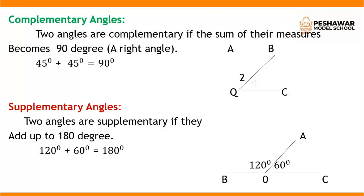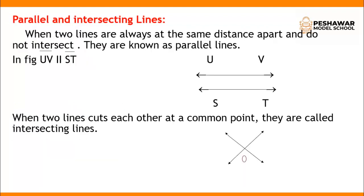The next topic is supplementary angles. Two angles are supplementary if they add up to 180 degrees — whenever we add two angles and their sum is 180 degrees, they are known as supplementary angles. For example, one angle is 120 degrees and the other is 60 degrees, so 120 plus 60 equals 180 degrees.